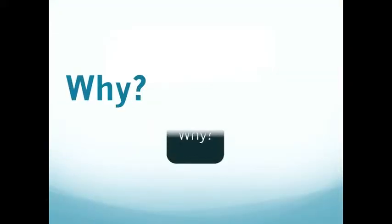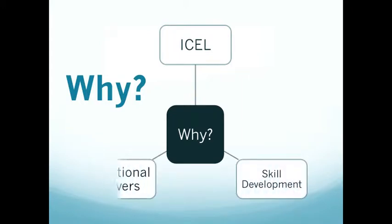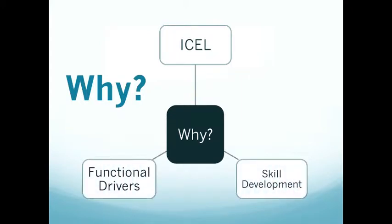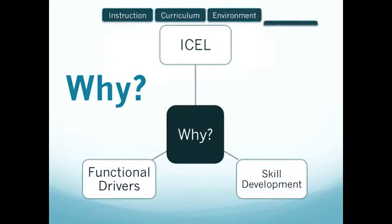Next we need to look at why. We can look across many different avenues. One of the more common ones in academics is looking at the ISIL components — factors over which we typically have control and can modify to help remove barriers to instruction or skill development. We can look at instruction — how material and content is delivered; the curriculum — which is the material we're delivering; environmental factors around that; and learner factors over which we do have control.